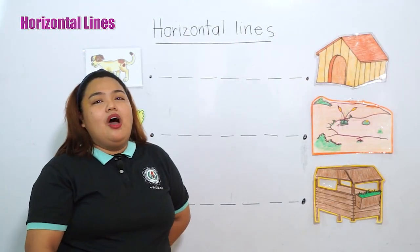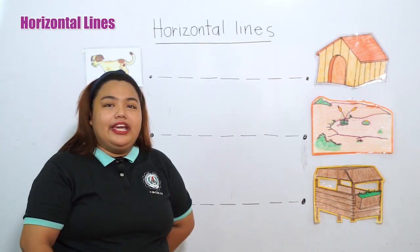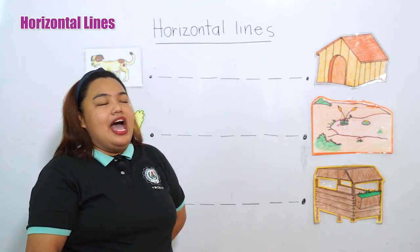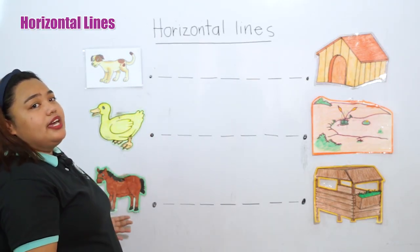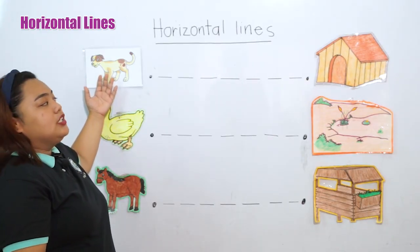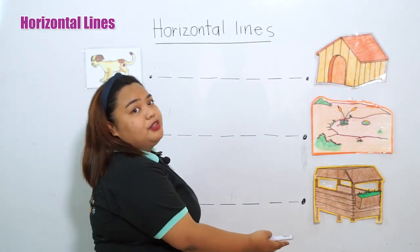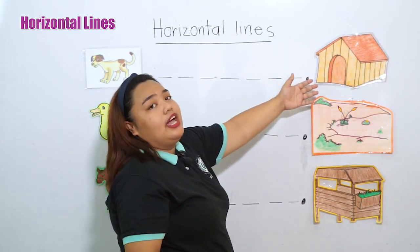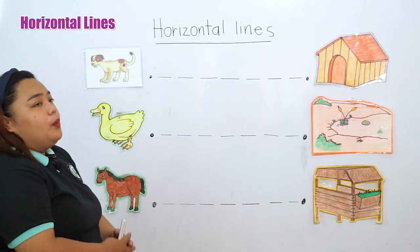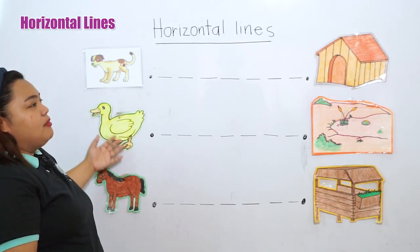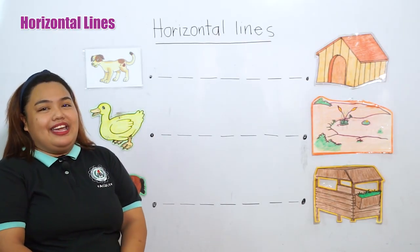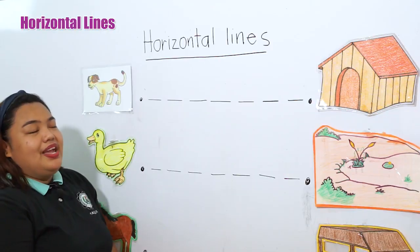How to write a horizontal line? Teacher will teach you how to write a horizontal line. As you can see on the left side of the board, there are different kinds of animals, while on the right side of the board, there are different kinds of homes of animals. We're going to help the different animals find their home by tracing the broken lines.